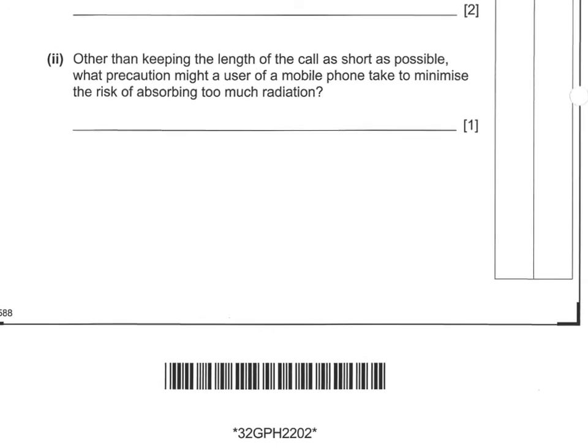Other than keeping the length of the call as short as possible, what precaution might a user take to minimise risk of absorbing too much radiation? You could use a Bluetooth connection or a cabled headphone system with a microphone. So you could take calls without having to hold the phone to your head. Basically, any method that allows you to keep the phone away from your head while taking calls is what they're looking for here.